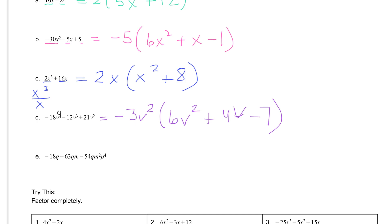And the last one we can do together, letter E. We have negative 18q plus 63qm minus 54qm squared p to the fourth. We do have three terms here. Remember, terms are separated by addition and subtraction signs, so this last term, even though it looks very long, is just one term because everything is being multiplied together.